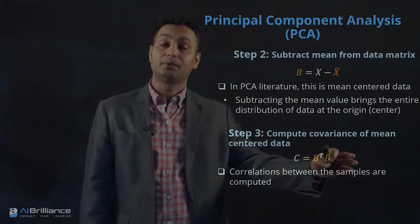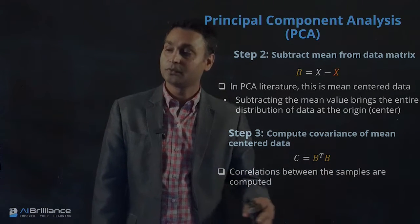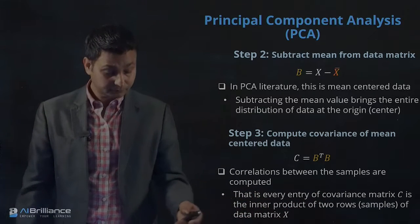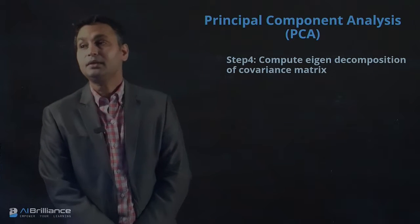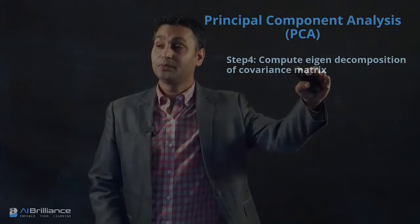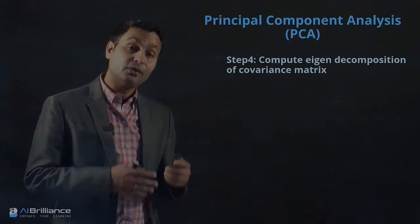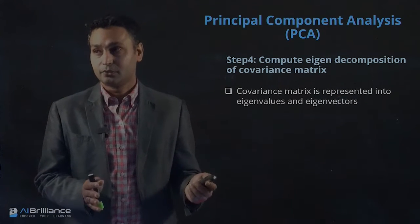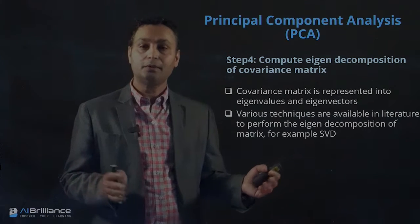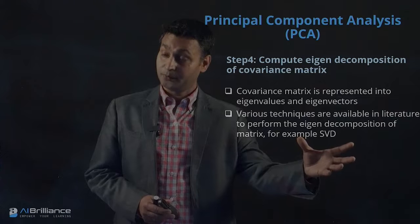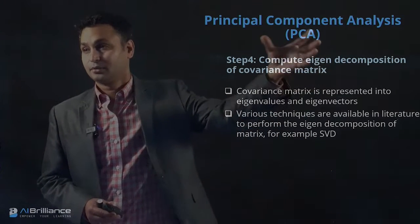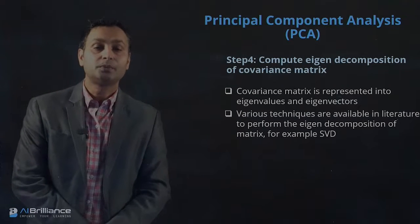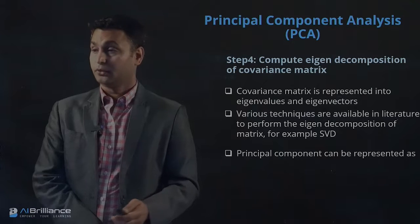What C computes is essentially the correlation between different samples. Each entry of the covariance matrix C is the inner product of two rows of the data matrix X. Once we have step three done, step four is performing the eigenvalue decomposition of C — solving the eigenvalue problem — so the covariance matrix is decomposed into eigenvalues and eigenvectors. Two methods are available: eigen decomposition or singular value decomposition.